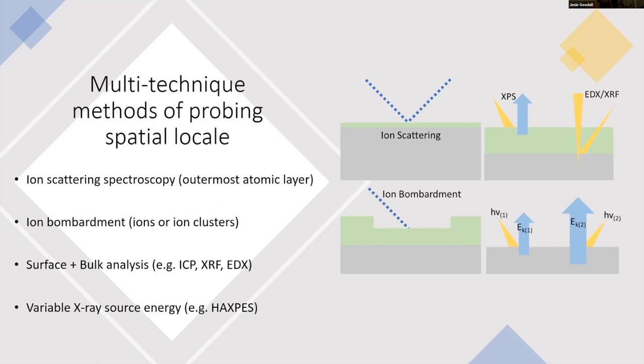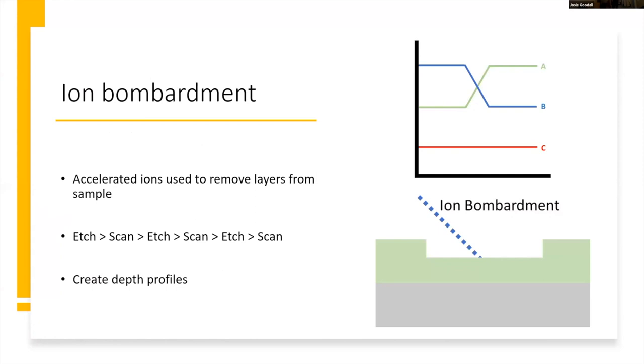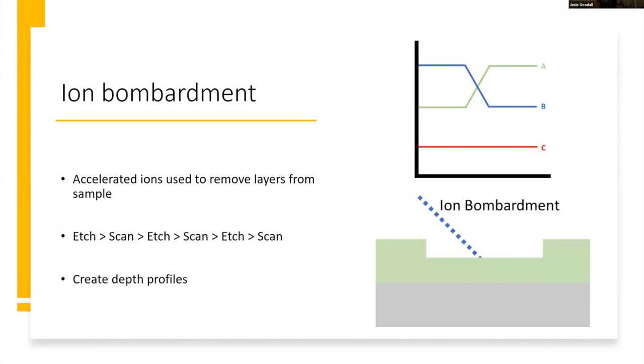I'm going to focus first on ion bombardment. This is probably the simplest thing in terms of experimental setup. You just take an ion and smash it into the material. If you do an XPS measurement, then ion etch into it, remove a few layers, and do another XPS measurement, you can start to build up a profile of what your sample looks like from the surface and deeper into the surface. A nice example of this is the Platinum Cobalt Electrocatalyst for Oxygen Reduction from three years ago.